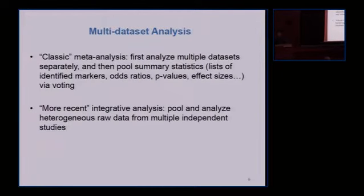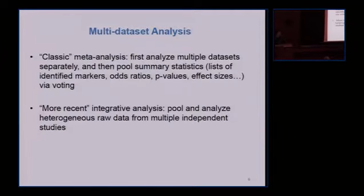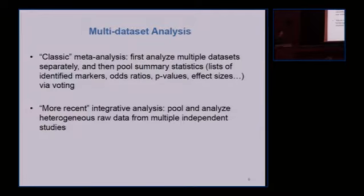For multi-dataset analysis, a more straightforward or classic approach is meta-analysis: you have 10 independent datasets, you analyze them individually, and then combine summary statistics — such as the list of markers identified, odds ratios, hazard ratios, or p-values. In the more recent integrative analysis, instead of pooling summary statistics, we pull the raw data, and instead of doing 10 separate analyses, we do the analysis just once.